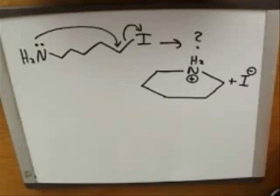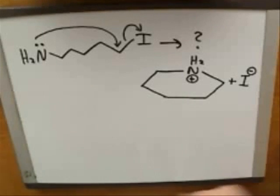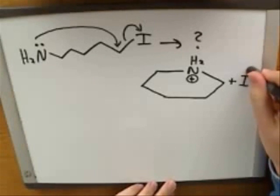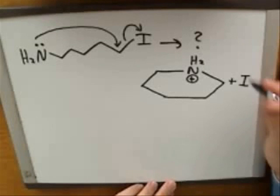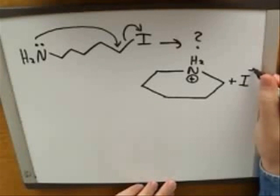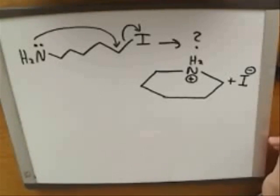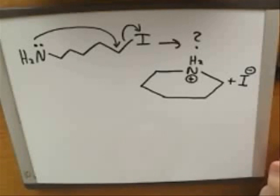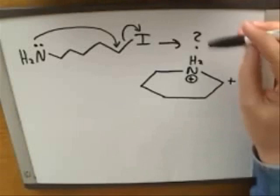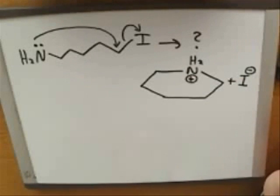Here are the correct products from these electron-pushing arrows. We actually get two different products in this case. So now we've answered the question — here are the products from these electron-pushing arrows.